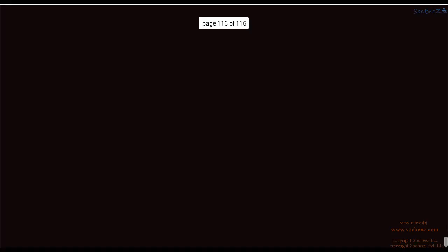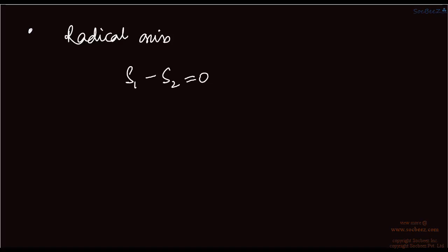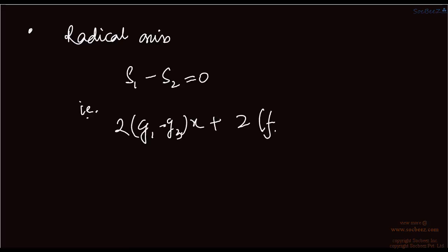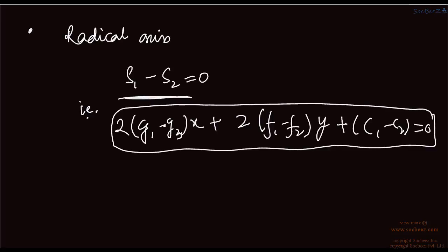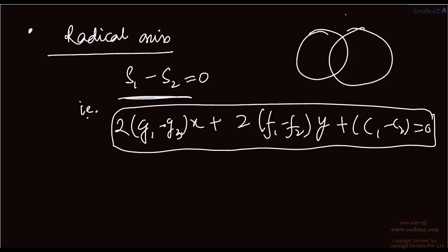The radical axis formula is S1 minus S2 equals 0. You can also write this as 2(g1 minus g2)x plus 2(f1 minus f2)y plus (c1 minus c2) equals 0. If you have two circles, the radical axis is obtained by simply subtracting the two circle equations.